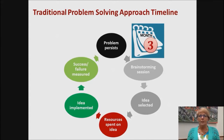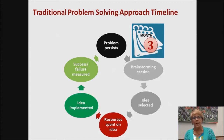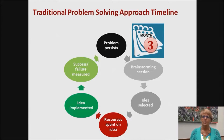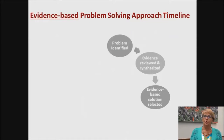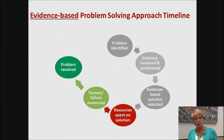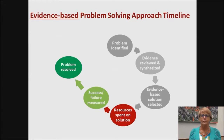EBP is the way you can stop just trying things by adding one additional step: go look at the evidence. By applying that one extra step, hopefully you can break out of this repetitious cycle of not fixing problems. When you look at the evidence, chances are it will drive the decision and tell you what's most likely to work. Instead, you identify a problem, review the evidence, synthesize it, apply the evidence-based decision to your setting, put resources toward the evidence-based solution, and measure your success — and more likely you'll resolve the problem because you've picked a good idea to implement.